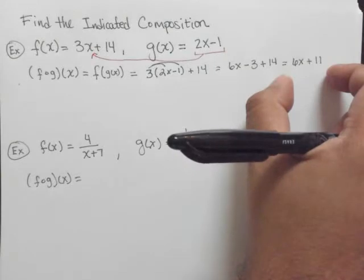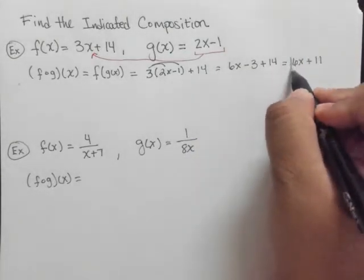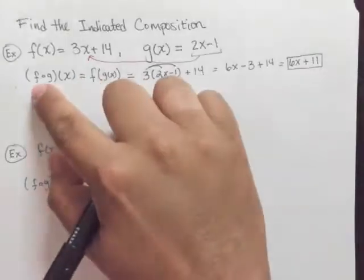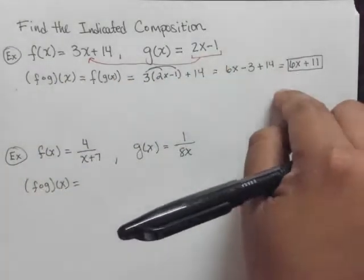So there it is, 6x plus 11. So this is the answer. This is what f composed of g of x is. 6x plus 11.